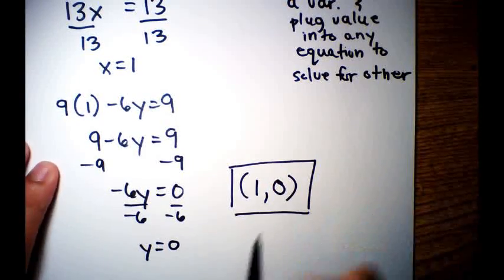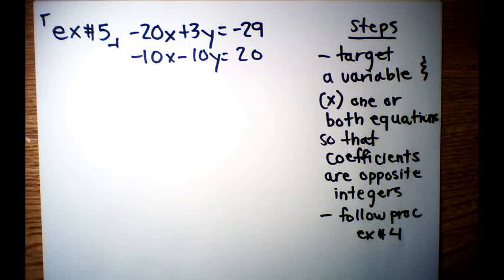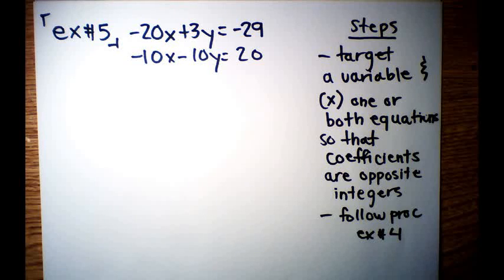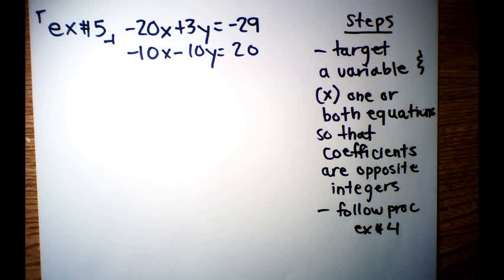This is your answer for example number 4. Example number 5 is this. We're still doing elimination. Negative 20x plus 3y is equal to negative 29, and negative 10x minus 10y is equal to 20. The first step is to target a variable, either x or y, whatever is the easier one for you. Then you're either going to multiply one or both equations so that the coefficients are opposite integers. Opposite integers just means that one is 2 and one is negative 2, one is negative 20 and one is 20. And then from there, we can add down and follow the same procedures as example number 4.